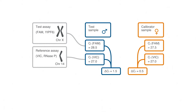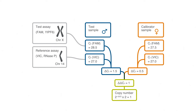We then subtract the DCT of the calibrator from the DCT of the unknown. Next, we convert the value to a relative quantity and then multiply the relative quantity, or RQ, by the copy number of the calibrator, which in this case is 2 for RNase P. A copy number of 1 — and no messy standard curves to deal with.